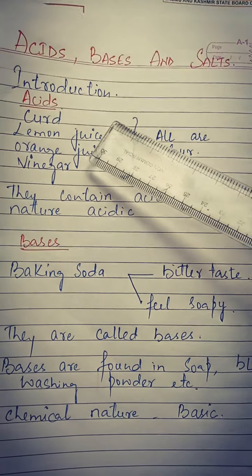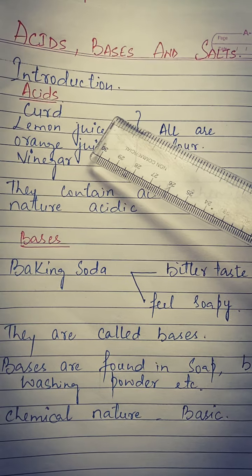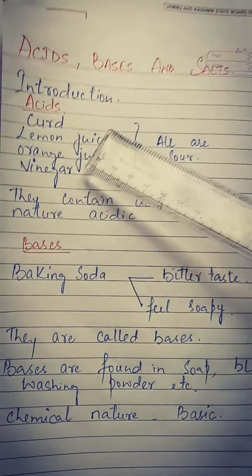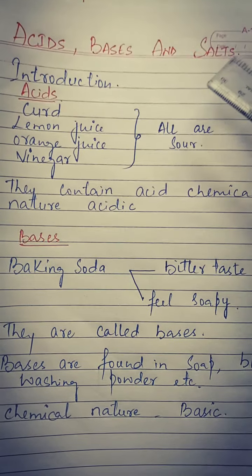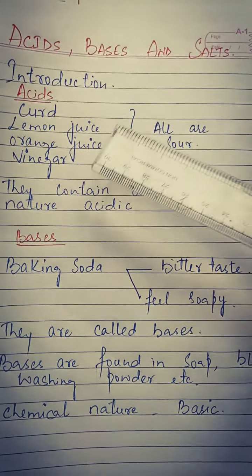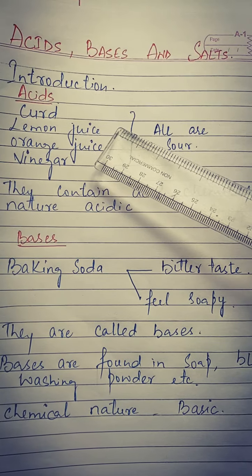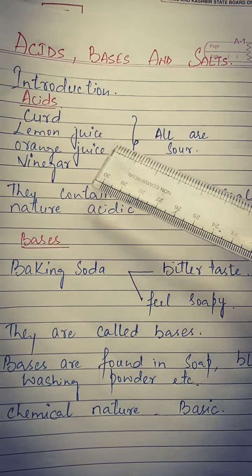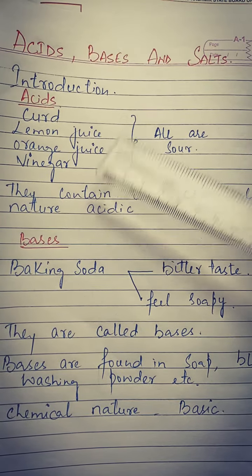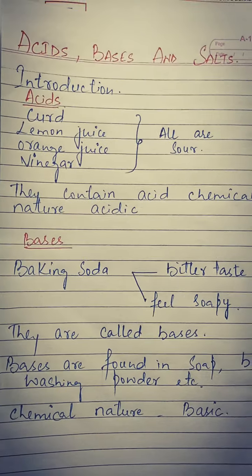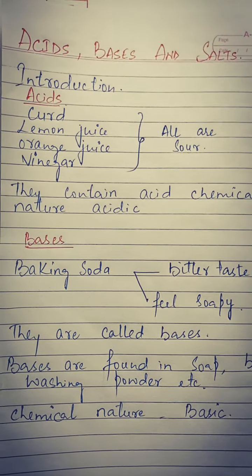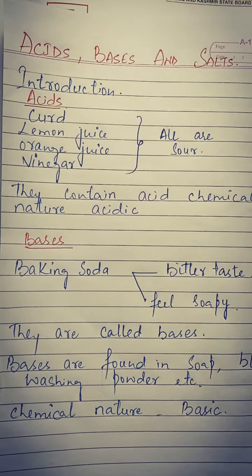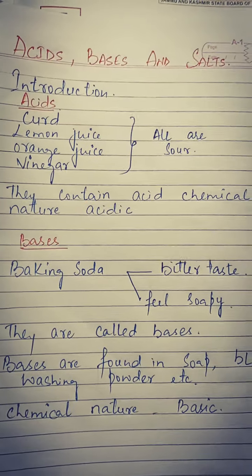दूसरी चीज, जैसे कि आप लोग के घर में curd होता है — curd बोलते हैं दही को — दही में भी एक acid होता है, तो वो भी हमारे लिए फायदेमंद होता है। Lemon juice जो आप लोग पीते हो, नींबू पानी, उसमें भी acid होता है। Orange juice, vinegar — ये सब चीजें ऐसी हैं जिनमें acid present होता है और जो हमारे लिए बहुत ही फायदेमंद होती हैं।